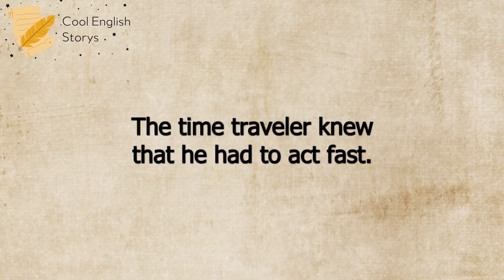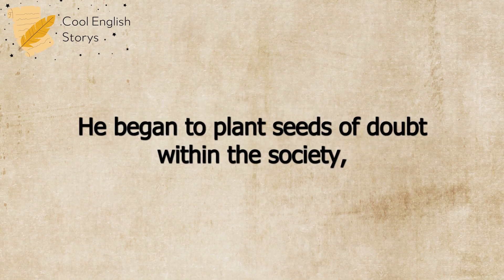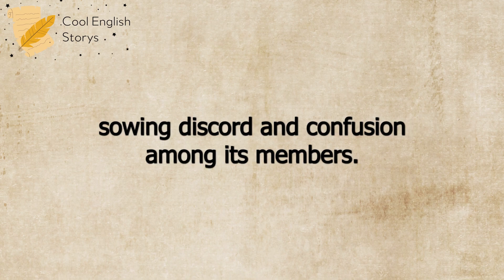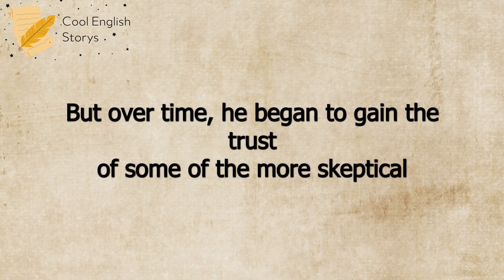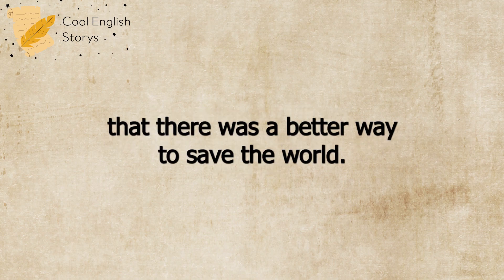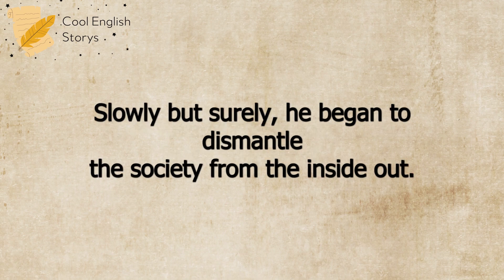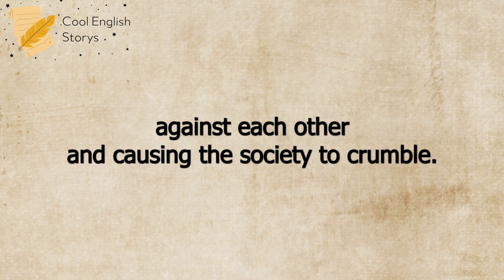The Time Traveler knew that he had to act fast. He couldn't allow this group to continue their plans, no matter the cost. He began to plant seeds of doubt within the society, sowing discord and confusion among its members. At first, his efforts were met with resistance, but over time he began to gain the trust of some of the more skeptical members. He convinced them that the society's goals were flawed, that there was a better way to save the world. Slowly but surely, he began to dismantle the society from the inside out. He exposed their secrets, turning members against each other and causing the society to crumble.